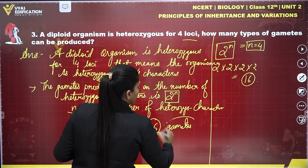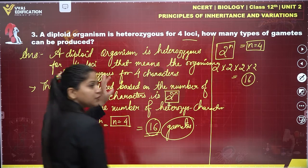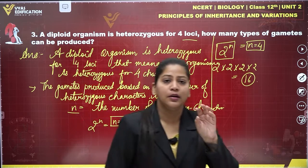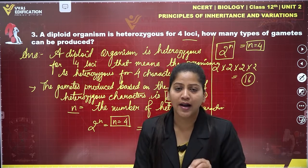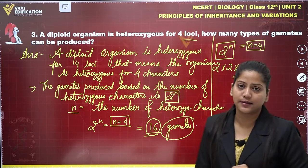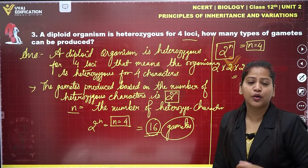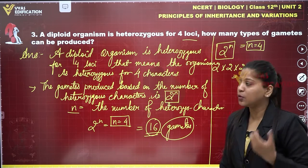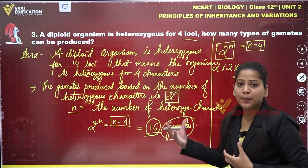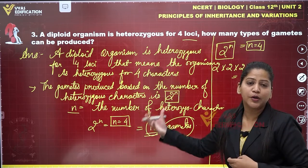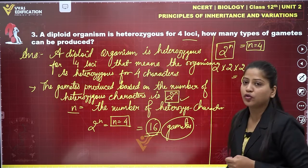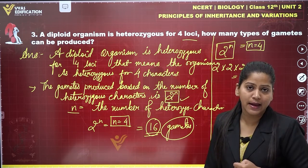So 16 is the answer — 16 gametes are going to be formed by this particular organism, which is diploid and has four different loci for heterozygous characters. This is the complete solution of question number three. You can solve the type of gametes produced by an organism using the formula two raised to the power n.